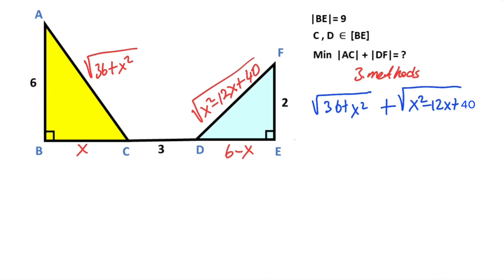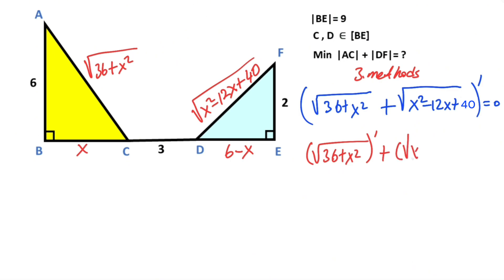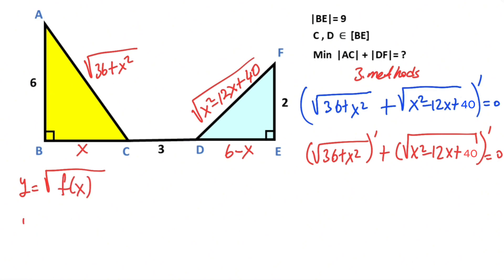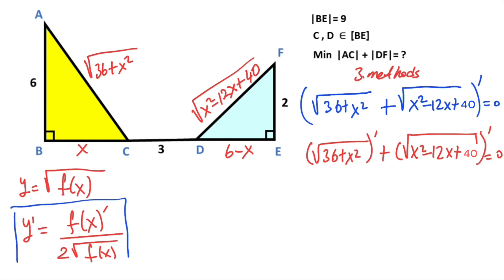For these two lengths to be at their minimum, their derivative must equal zero. Let's remind you: if y equals the square root of f(x), the derivative of y equals the derivative of f(x) over two times the square root of f(x).